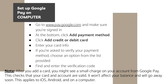Here's how to set up Google Pay on your computer. Go to the Google Pay website at pay.google.com and make sure you're signed in. At the bottom, click Add Payment Method, then Add Credit Card or Debit Card. Enter your card information, and if asked to verify your payment method, choose an option and enter the verification code. Note: if you add a card, you may see a small temporary charge from Google Pay — this checks that your card and account are valid and will go away soon.